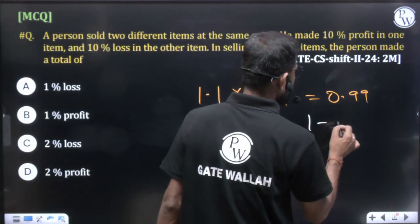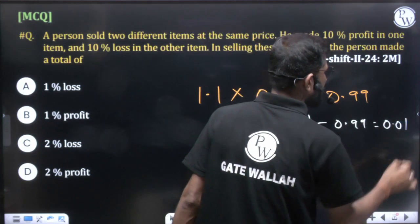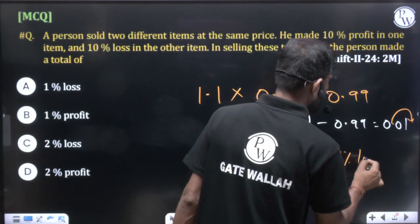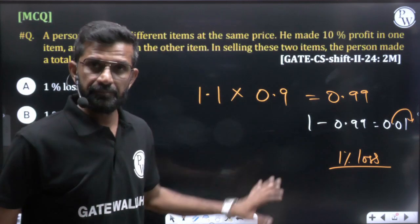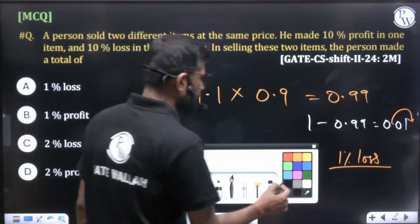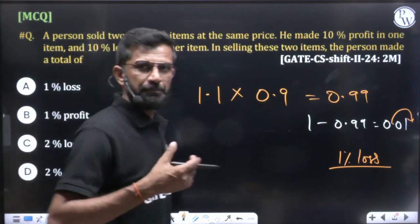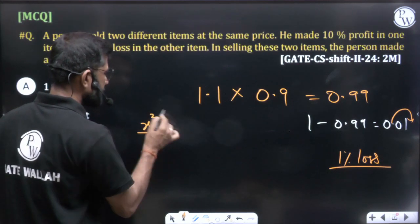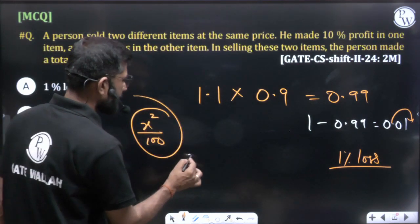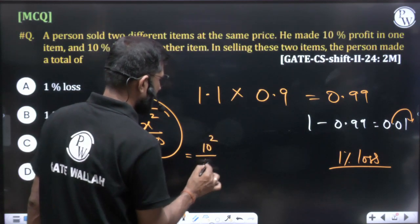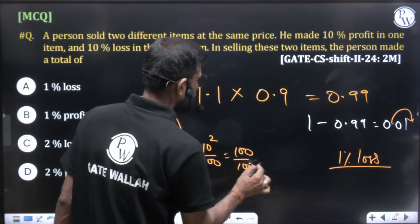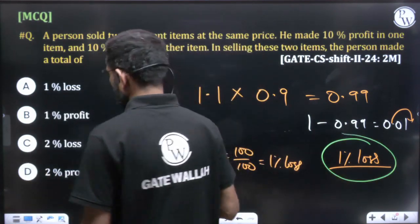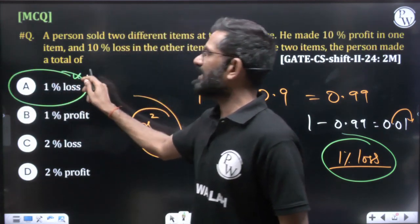The value 0.99 is 0.01 less than one. Moving two decimal places to the right gives us 1 percent loss — loss because it was less than one. Using the formula: when the same percentage gain and loss occur on two products, the overall loss is x squared by 100. Here x is 10 percent, so 10 squared by 100 equals 100 by 100, which equals 1 percent loss. Either way, we get 1 percent loss, which is option A.